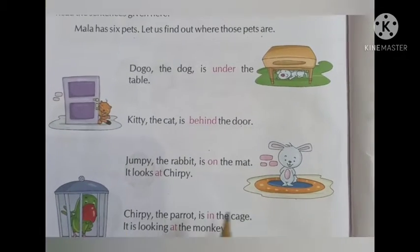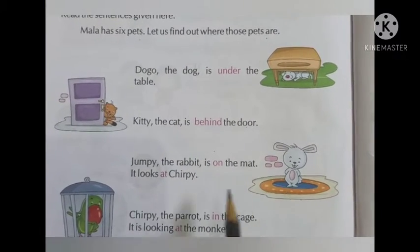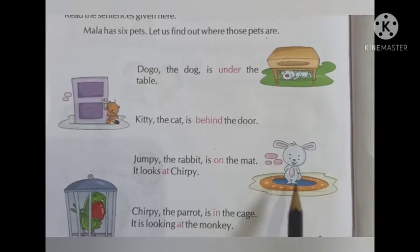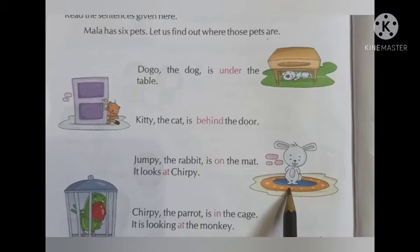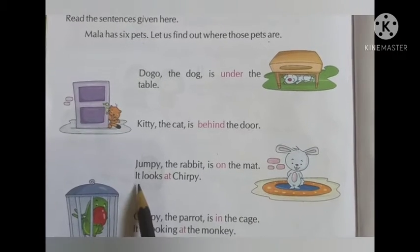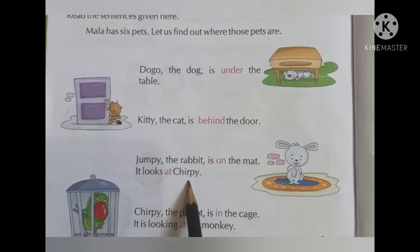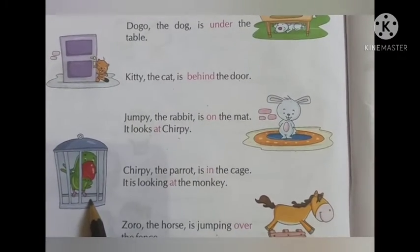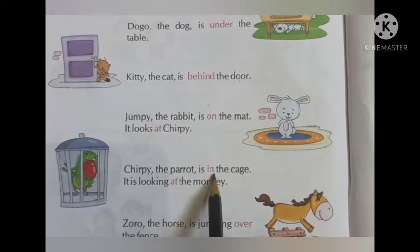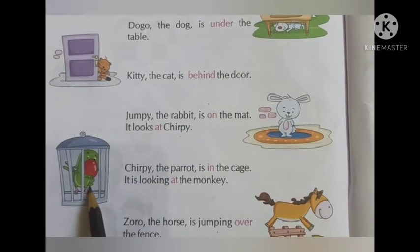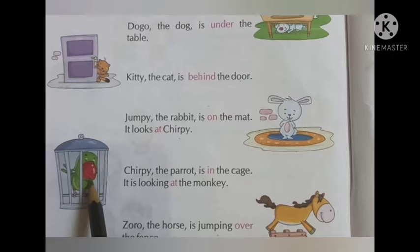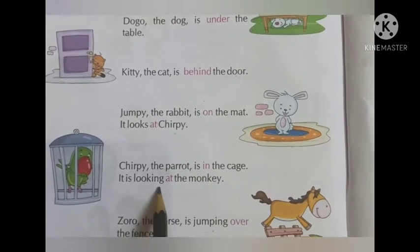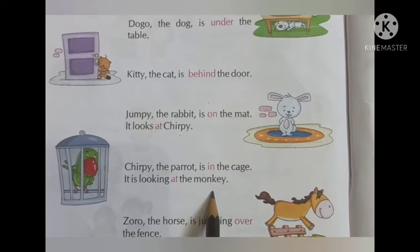Here you can see a picture of a rabbit. Jumpy the rabbit is on the mat — the rabbit is standing on the mat and it looks at Chirpy. Chirpy is a parrot. Chirpy the parrot is in the cage — the parrot is inside the cage. It is looking at the monkey.